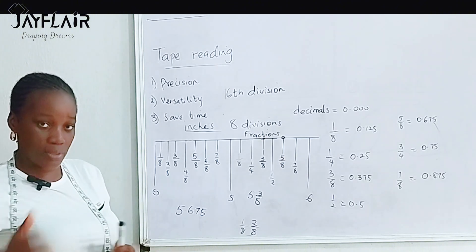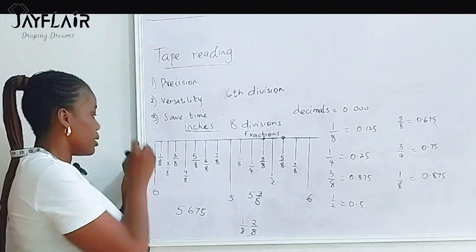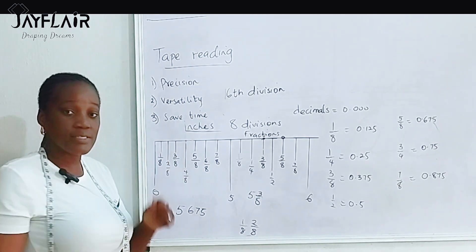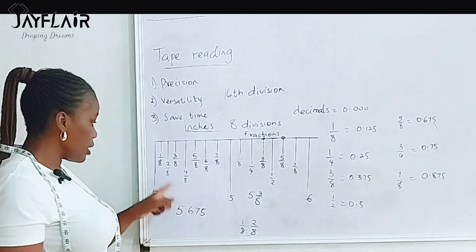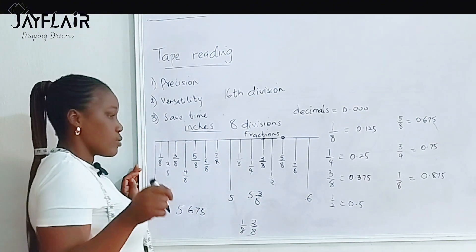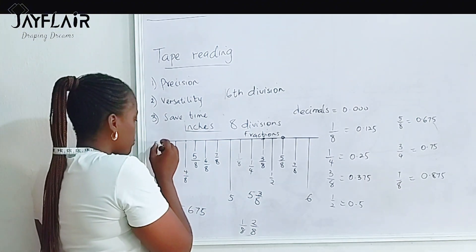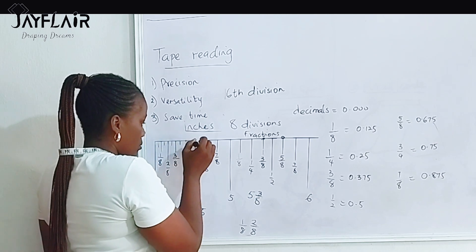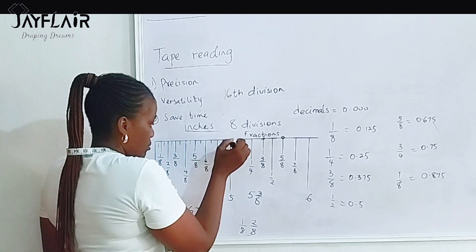Well, I will recommend or suggest that you also go into the 16th division. How do we go about that? In between each of these lines, there are measuring tapes that have 16 divisions. But the 8th division is very common for fashion designers. So in such a tape, you will see smaller divisions in between.